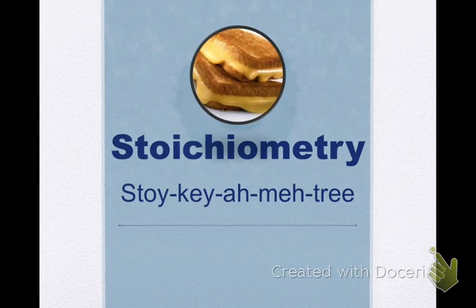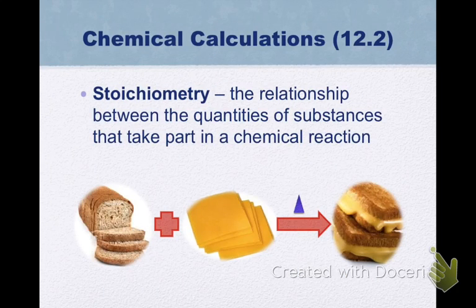We're now going to take a look at some more complex calculations involving the mole. This is called stoichiometry. Stoichiometry is the relationship between the quantities of substances that take part in a chemical reaction.